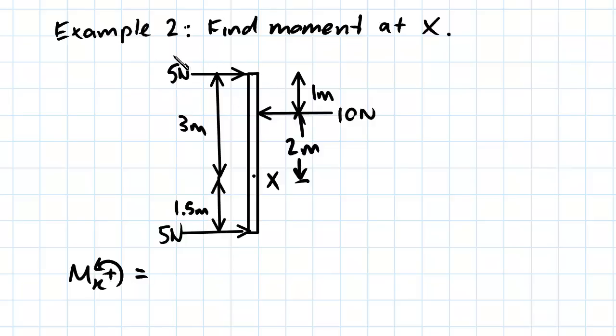So we'll start off by looking at the first force, which is five newtons. Now you can see that it's pushing this beam here, or this column, from left to right. And since X is below it, it's clear that this is going to cause a clockwise rotation of the column. So therefore this force will take as negative.